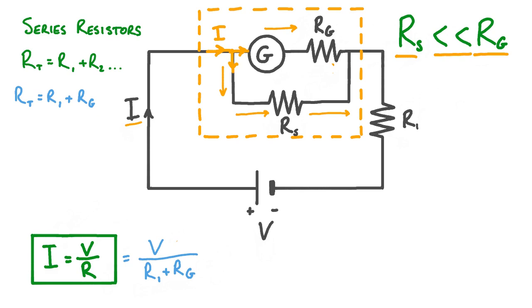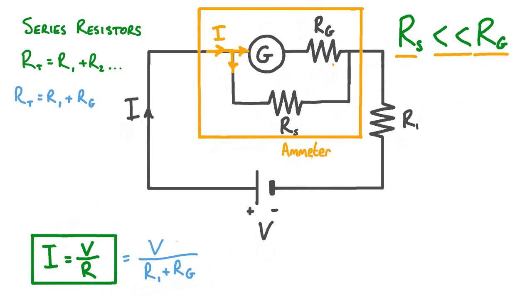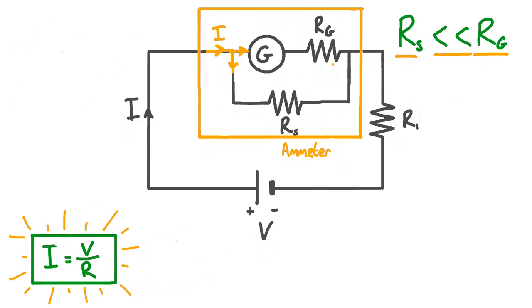This means the current is barely affected. In addition, because a small but fixed proportion of the current goes through the galvanometer, the galvanometer needle is proportional to the current in the circuit. By carefully choosing the resistance of the shunt resistor, we control how the current is split between the two parallel branches. This means we can ensure the current in the galvanometer is high enough for a clear reading, but low enough that the needle doesn't deflect fully. This is the basic design principle of an ammeter. When building an ammeter, it's important that the resistance of the shunt resistor is carefully chosen, and to work out the best value, we can use Ohm's law.